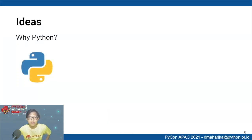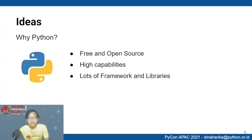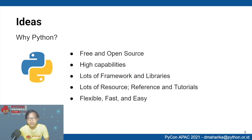Why Python? There are many programming languages, but we chose Python because: first, it's free and open source — you can use it individually or at enterprise or national level. Python has high capabilities for computer vision with many frameworks and libraries such as TensorFlow, PyTorch, OpenCV, and Pandas. There are also many resources and tutorials available — you can learn just by searching online. And Python is flexible, fast, and easy to use, even for complex computer vision projects.